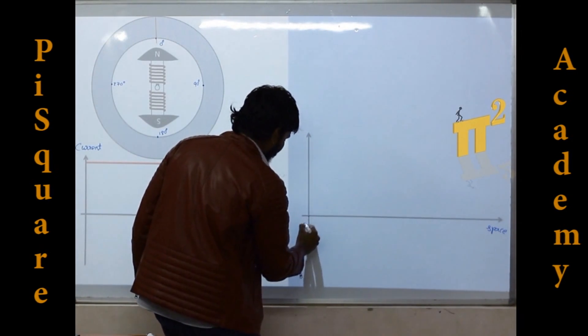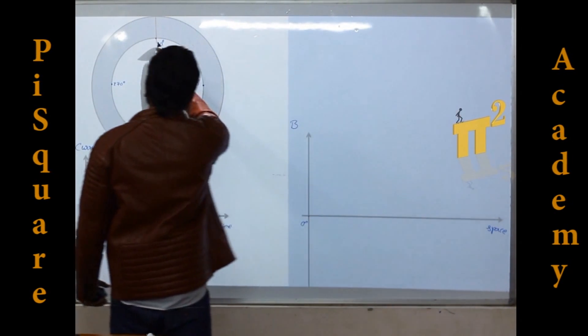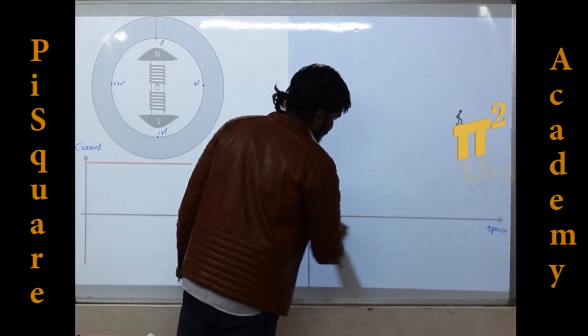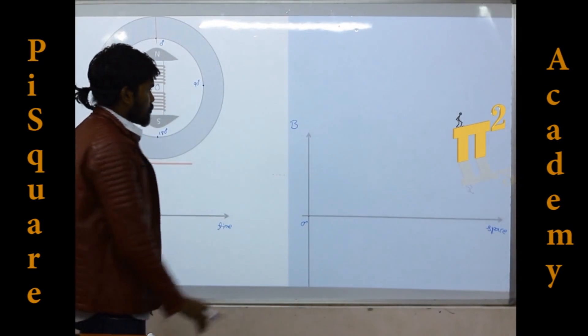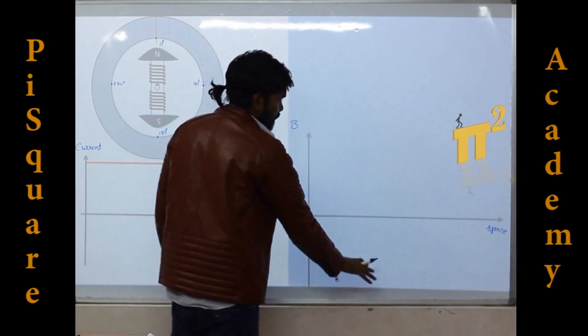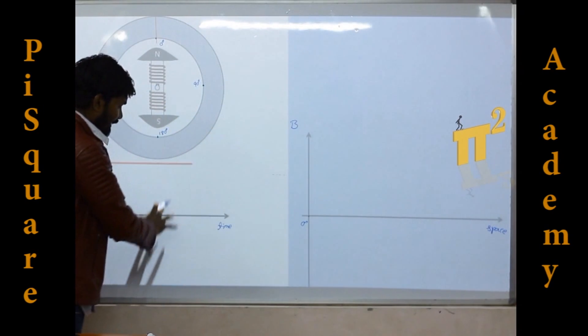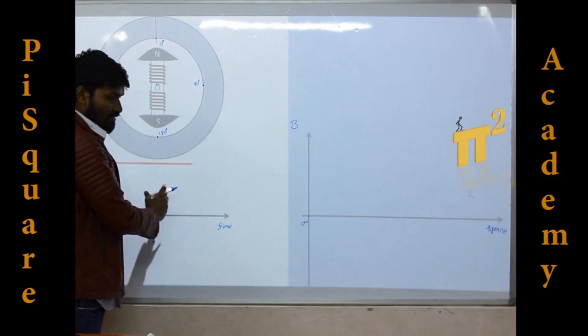That is here, we will take 0 degrees instant and next 90 degrees, like that space angle. So this side throughout we will see the space part, space angle. This side we will see at different instants of time.